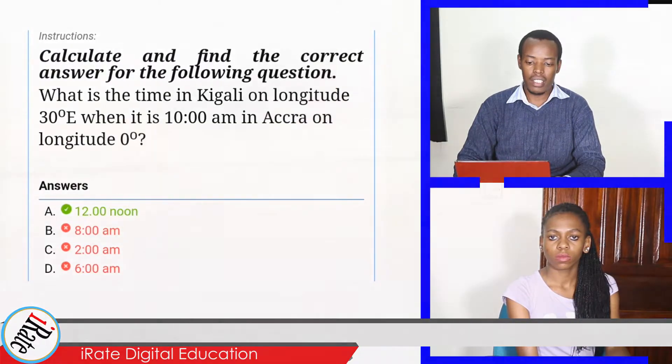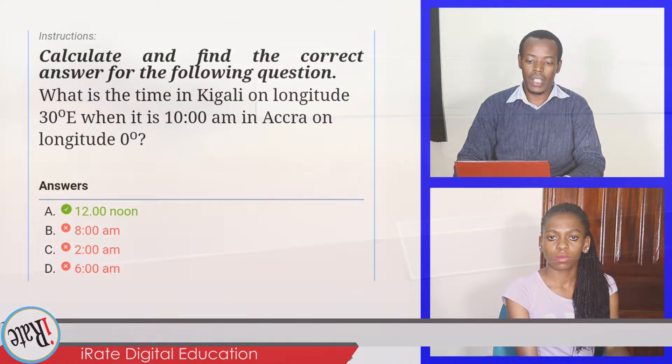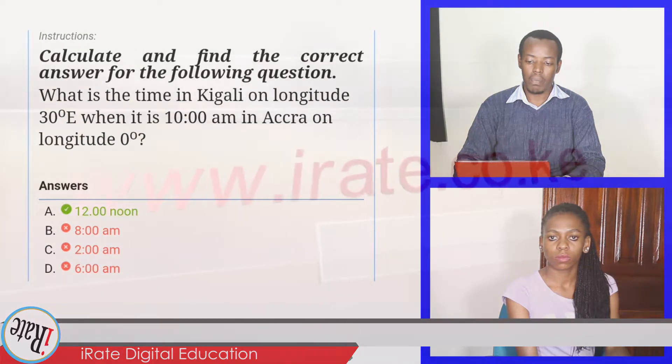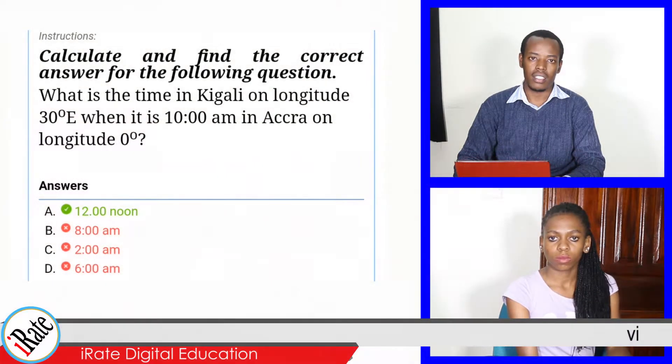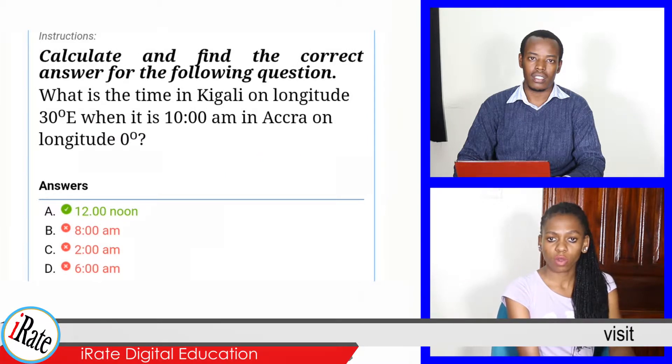What is the time in Kigali on longitude 30 degrees east when it is 10 a.m. in Accra on longitude zero degrees? The answer is 12 noon. That is correct.